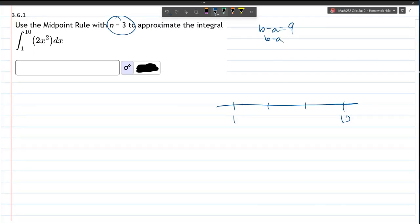So, b minus a over n, which is 9 over 3. And that's 3. That's the width of each rectangle.